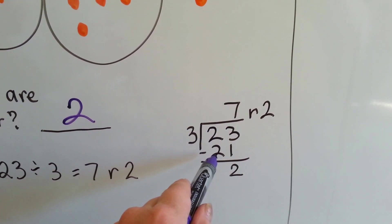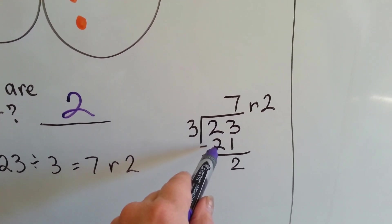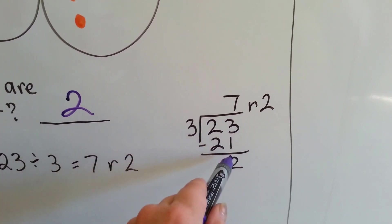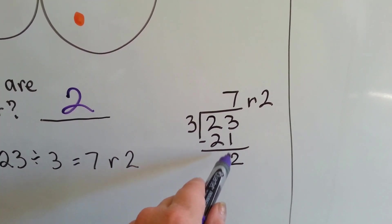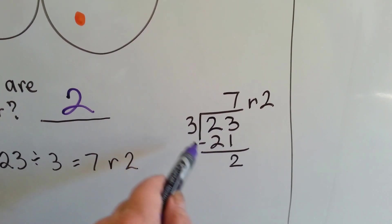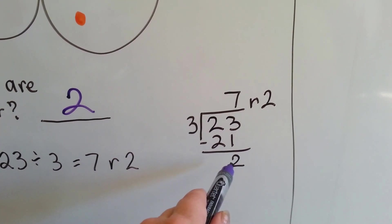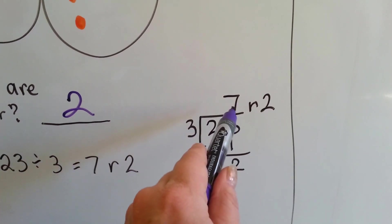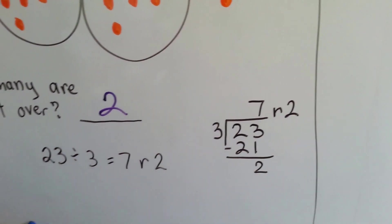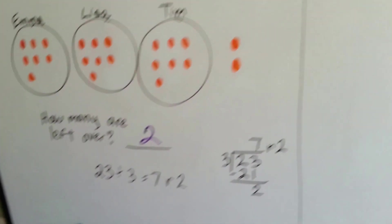We put our 21 down here. We do our subtraction, and we get 2 left over. 3 take away 1 is 2. Can 3 fit into 2? No. Then 2 is the remainder. So we have an answer of 7 remainder 2. Let's try another one.